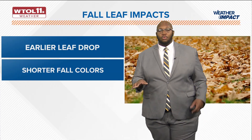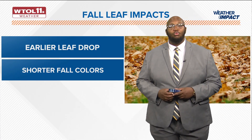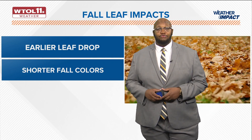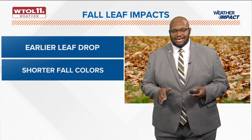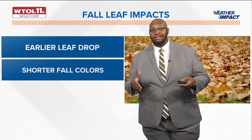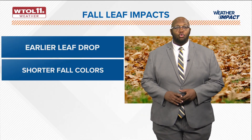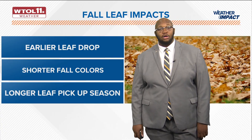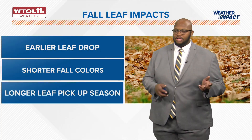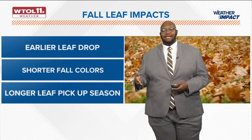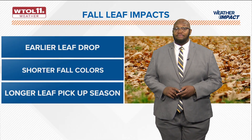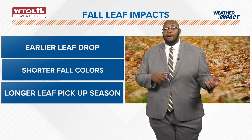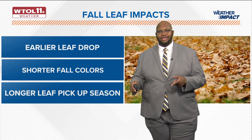When we talk about fall leaf impacts from a warming climate — well, we could see an earlier leaf drop, which actually means shorter fall colors. That ramp-up to peak colors becomes shorter due to warmer, wetter, and drier conditions, which could put heat stress on those trees, and also a longer leaf pickup season. That's something people have to deal with around this time going further into November, and with a warming climate, we'd see even longer leaf pickup seasons as leaves fall both earlier and later in the season.